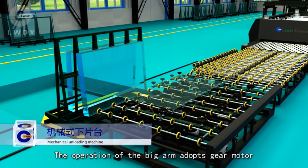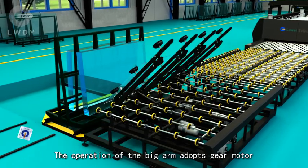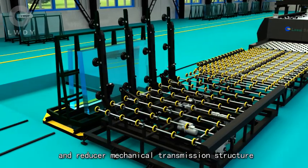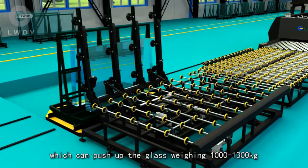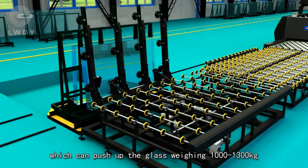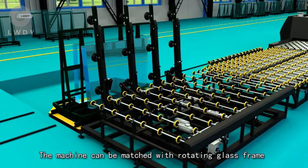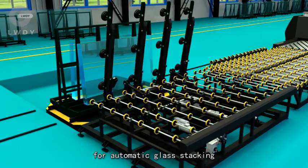The operation of the big arm adopts gear motor and reducer mechanical transmission structure, which can push up glass weighing 1000 to 1300 kilograms. The machine can be matched with a rotating glass frame for automatic glass stacking.